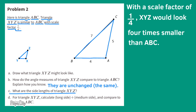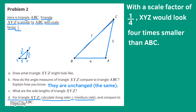Part C: What are the side lengths of triangle XYZ? The side lengths of XYZ would be 4 times smaller than their corresponding side lengths: 4 divided by 4 equals 1, and 5 divided by 4 equals 5 fourths. Part D: For triangle XYZ, calculate long side divided by medium side and compare to triangle ABC. 7 fourths divided by 5 fourths is equal to 7 divided by 5. The result is the same.